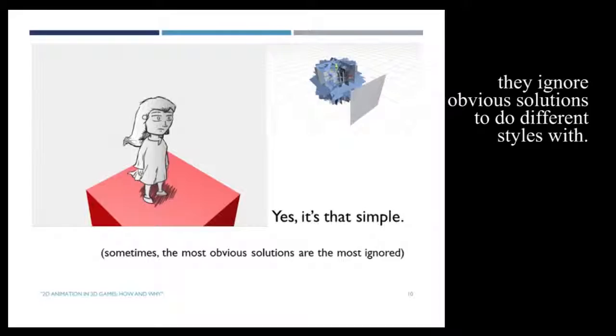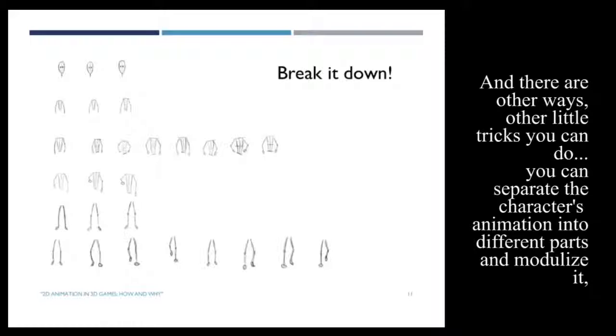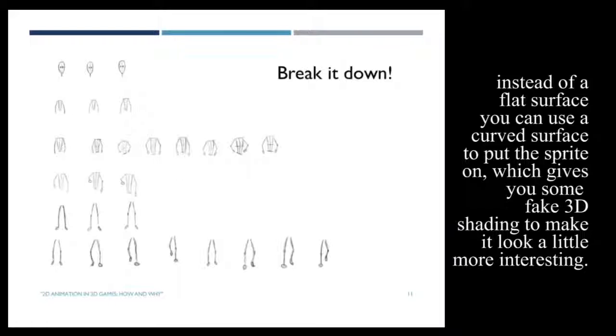And there are other ways, other little tricks that you could do, where you can separate the character's animation into different parts and modularize it. Instead of a flat surface, you can use a curved surface to put the sprite on, which gives you some fake 3D shading to make it a little bit more interesting.